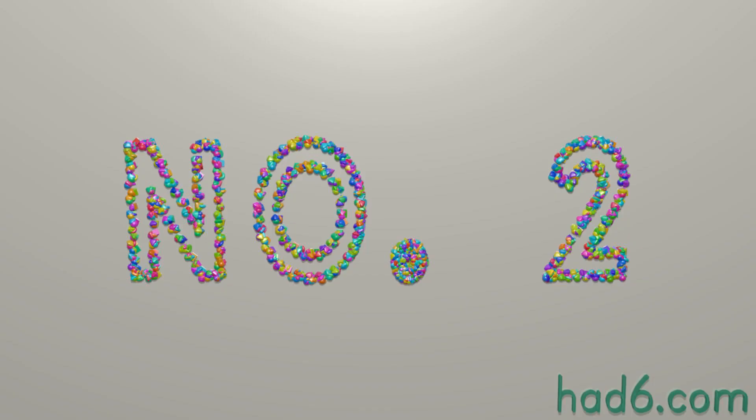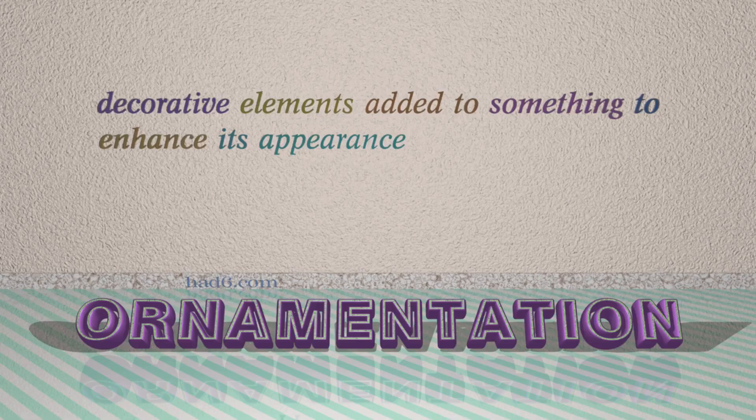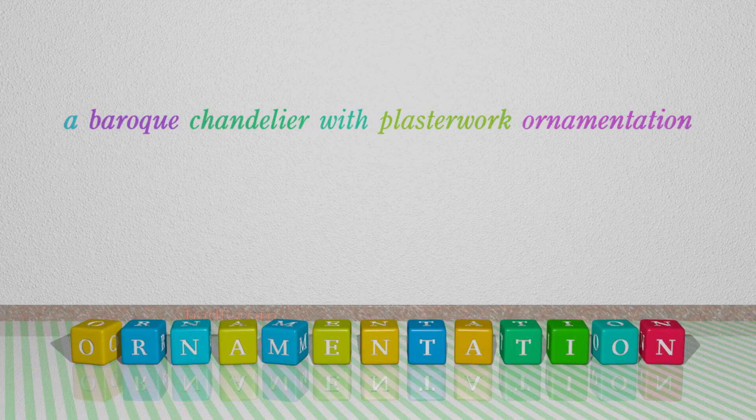Number 2: Ornamentation. Which means decorative elements added to something to enhance its appearance. For example: A baroque chandelier with plaster work ornamentation.